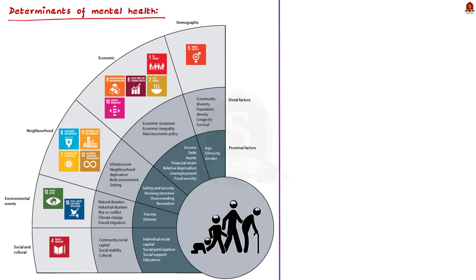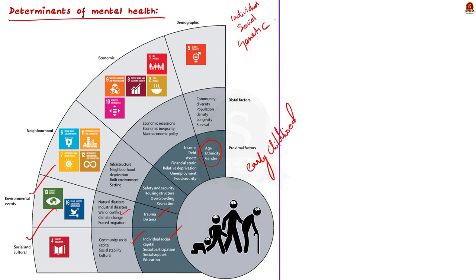Multiple individual, social and structural determinants combine to protect or undermine our mental health. For example, individual psychological and biological factors like emotional skill, substance use and genetics can make people more vulnerable to mental health problems. Secondly, exposure to unfavorable social, economic, geopolitical and environmental circumstances — including poverty, violence, inequality and environmental deprivation — increases people's risk of experiencing mental health conditions. Thirdly, risk can manifest at all stages of life, but those occurring during developmentally sensitive periods, especially early childhood, are particularly detrimental. For example, harsh parenting, physical punishments and bullying are leading risk factors for mental health conditions.